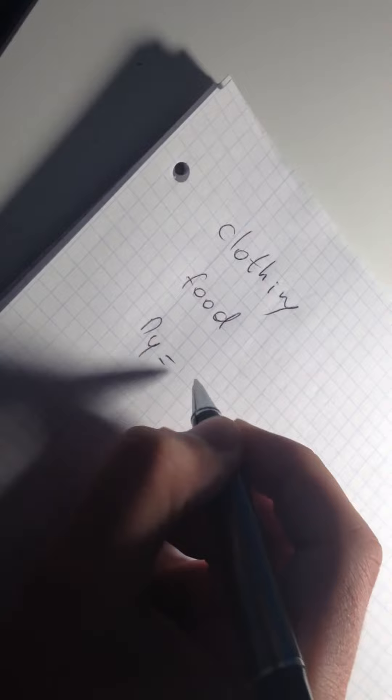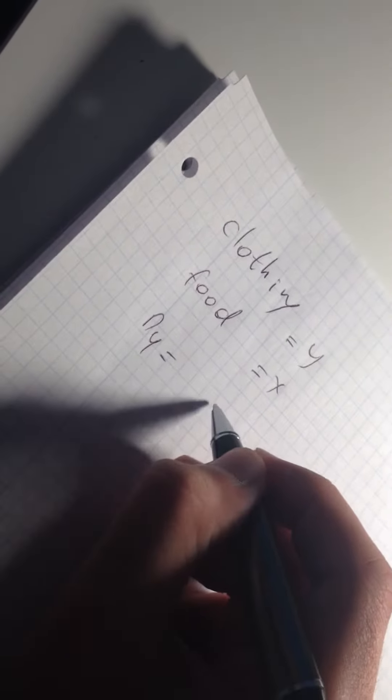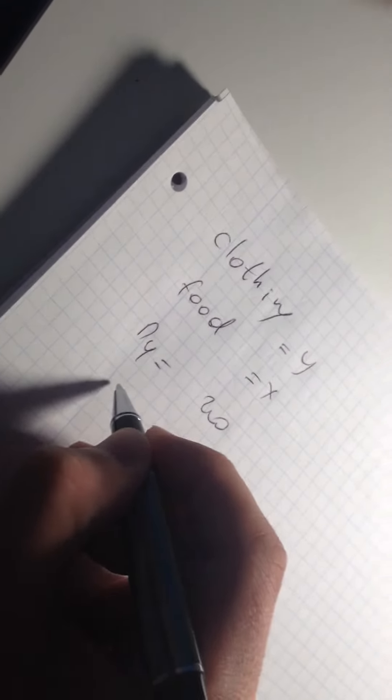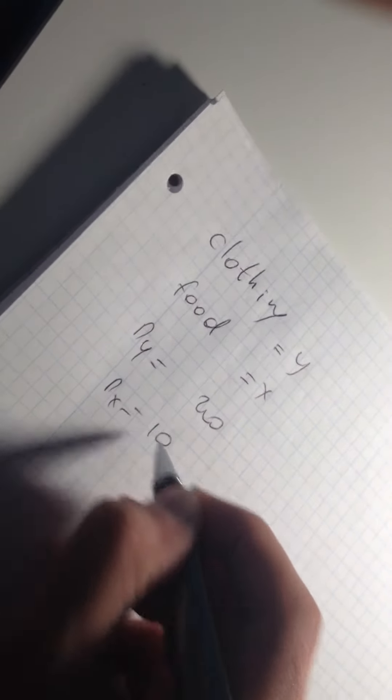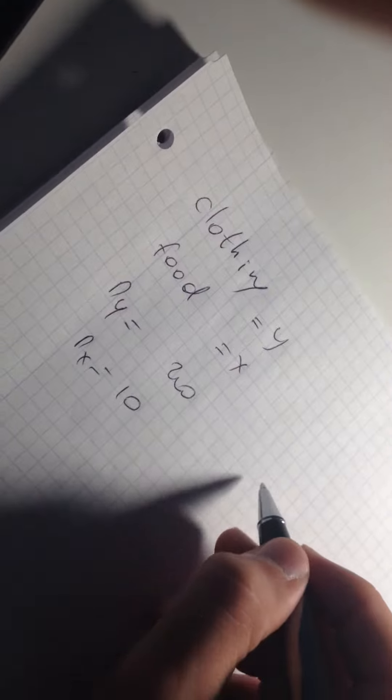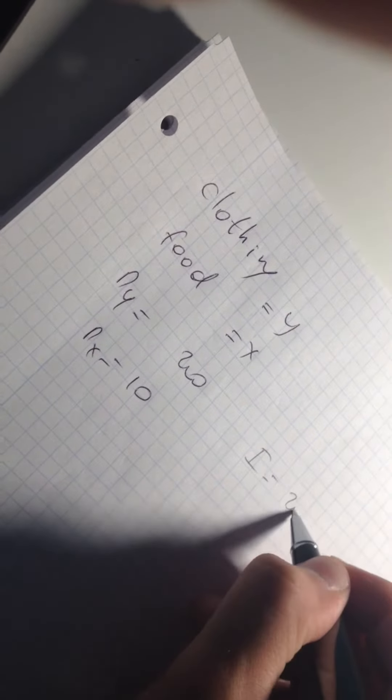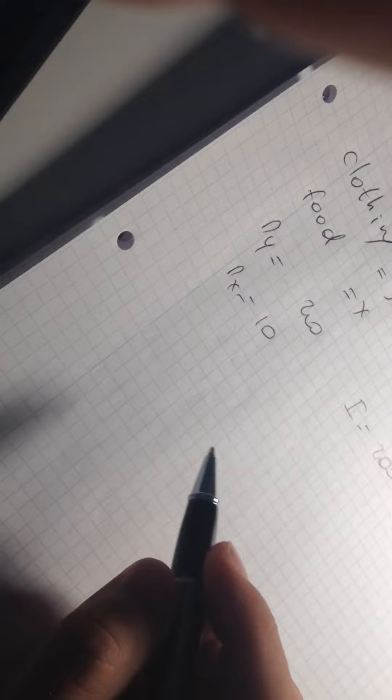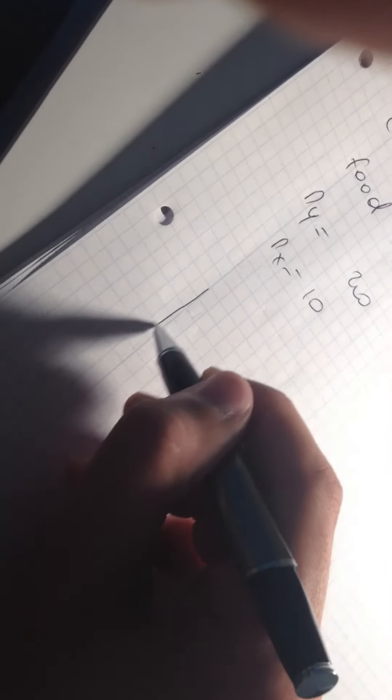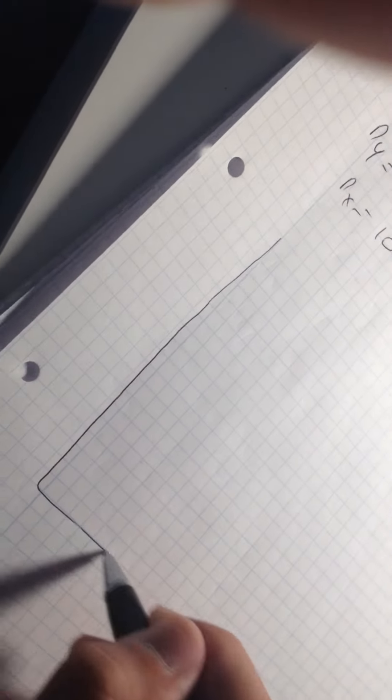For example, we have a customer and he wants to buy clothes and he wants to buy food. The price of clothing is going to be Y, it's going to be X. The price of clothing is 20 but the price of food is 10 and his income is like 200.